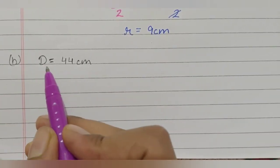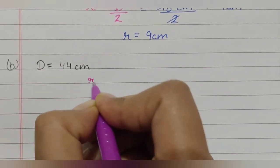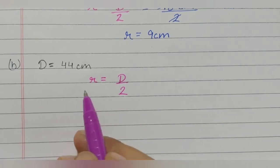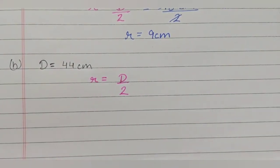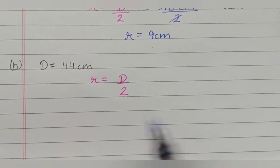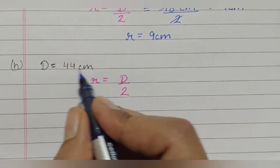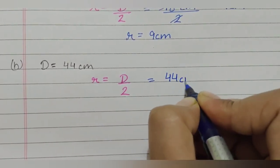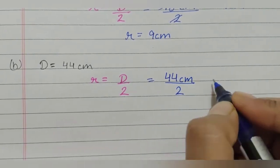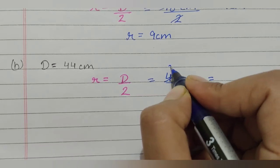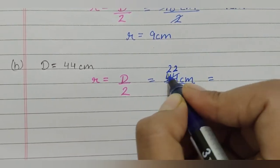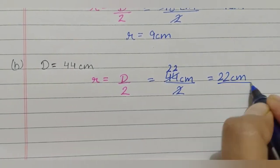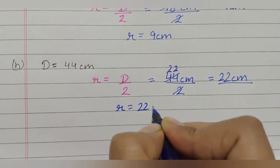One more example: diameter is equal to 44 centimeter. Again, first write down the formula — radius is equal to diameter divided by two. The value of diameter in the given question is 44 centimeter, so put the value here: 44 centimeter divided by two. Two times 22 is 44, so the answer is 22 centimeter. Radius is equal to 22 centimeter.